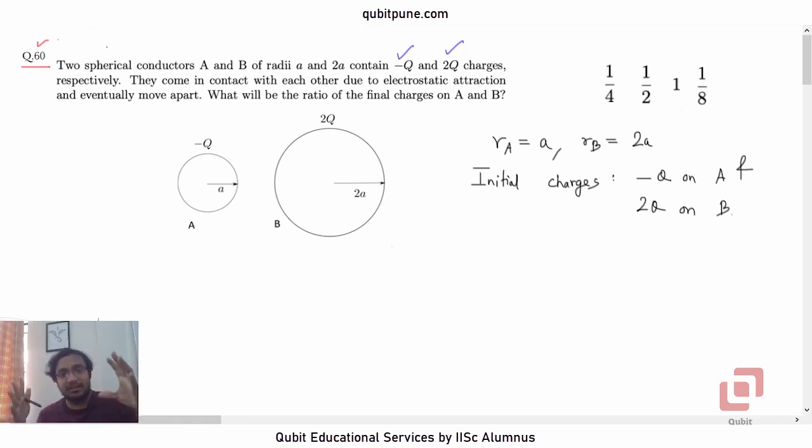Now when these conductors come in contact with each other, they are saying this, they come in contact, so there is physical contact between them. When they come in contact with each other, which quantity will become equal for both of them? It's the potential. So when they come in contact, VA will be equal to VB. We have also noted down the initial charges.